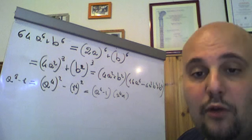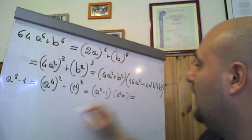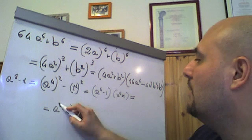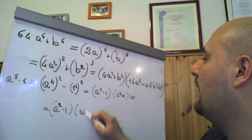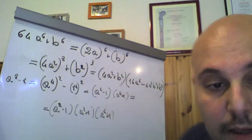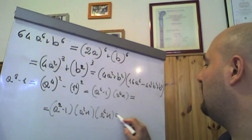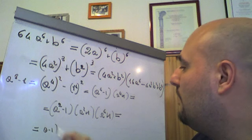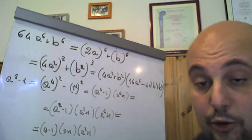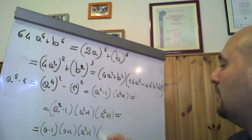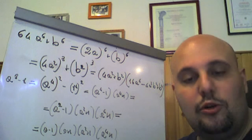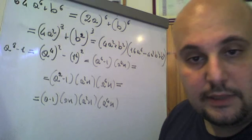Ma a⁴ meno 1 a sua volta è (a² meno 1) per (a² più 1), l'abbiamo visto. Perché a⁴ è a al quadrato, a quadrato è 1 e 1 al quadrato. Quindi si scriverà come (a² meno 1) che moltiplica (a² più 1) che moltiplica (a⁴ più 1). Dopodiché a² meno 1 ancora una volta è un'altra differenza di quadrati, quindi in definitiva scriveremo questo come (a meno 1)(a più 1)(a² più 1)(a⁴ più 1). Sono binomi che ammettono soluzioni, sono scomponibili nel campo dei numeri complessi. Ed ecco quindi la nostra scomposizione.